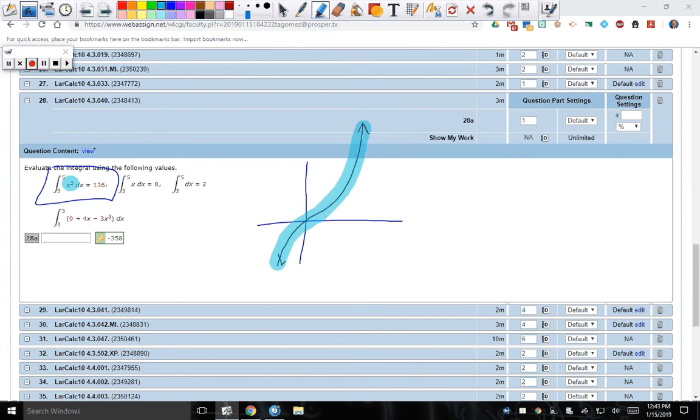But it does help sometimes for you to visually see that between 3 and 5, the area they're saying is going to be 136. This area is 136. And you can think of it as unit squared if you'd like.